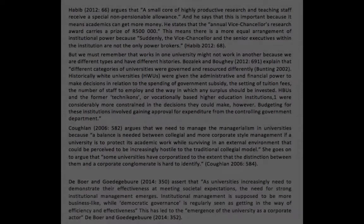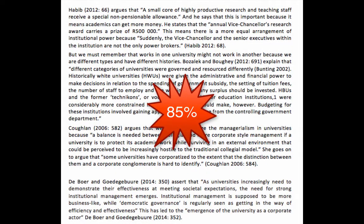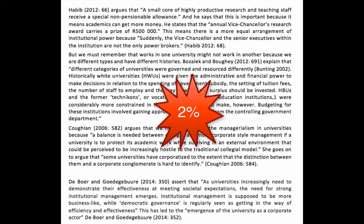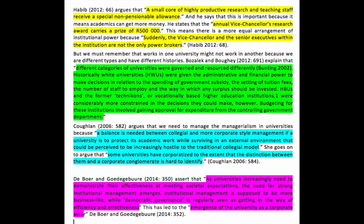This student got a Turnitin report indicating that 85% of her text was matched from elsewhere. When she went onto the filter menu and clicked Exclude Quotes, that percentage came all the way down to 2%. If we look more closely, we will see that simply excluding quotes doesn't deal with the problem. She has not committed plagiarism, but she hasn't learnt how to write well academically. She has simply cobbled together direct quotes from various readings, rather than understanding that her task is to draw on these readings to build her own argument.